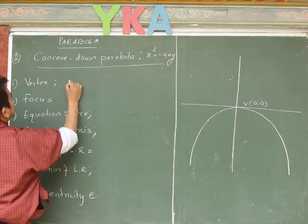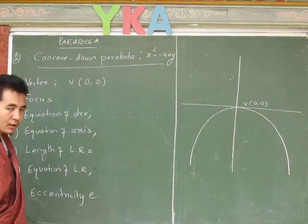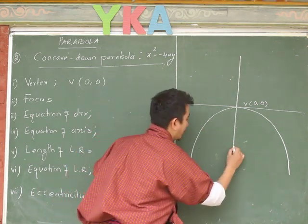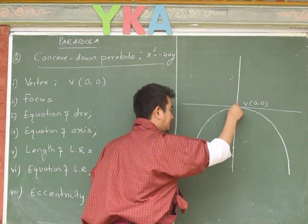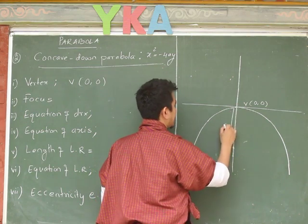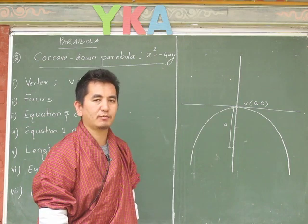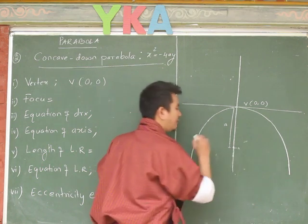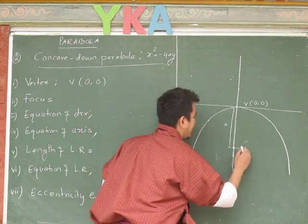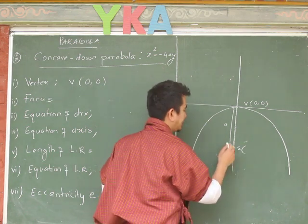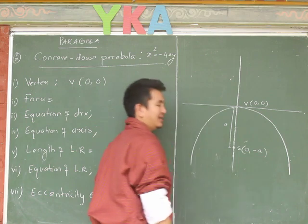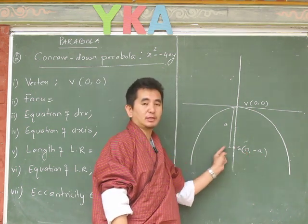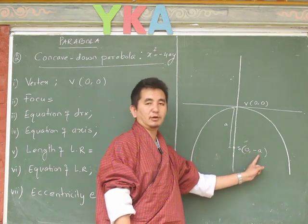The first point is the vertex at (0, 0). Next, the focus must always be inside the parabola. Taking the distance from the origin to the focus as 'a' — note that distance is never negative — this point is at negative a on the y-axis. So the focus is at (0, -a), with x-coordinate 0 and y-coordinate -a.